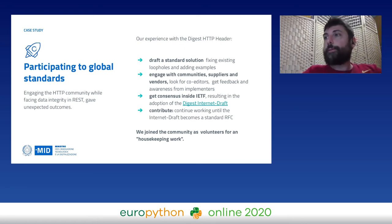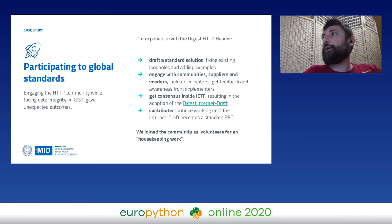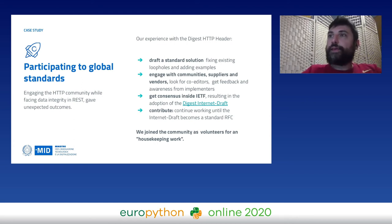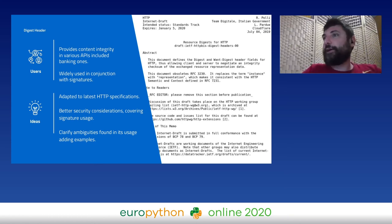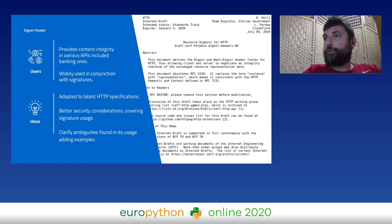The trick here was to join the community not as somebody wanting to get something from the community, but as a volunteer for housekeeping work — something everybody wanted done but nobody had time to do. This Digest header draft provides content integrity for various APIs including banking. It is now widely used in conjunction with signatures and has been adapted to the latest HTTP specification, with better security considerations covering signature usage.